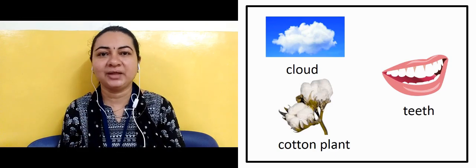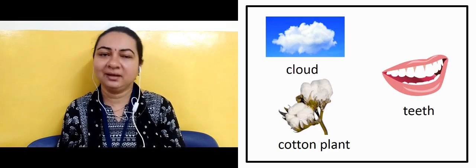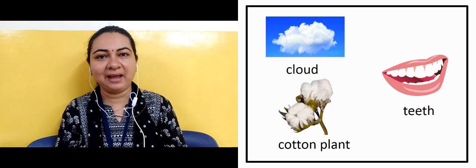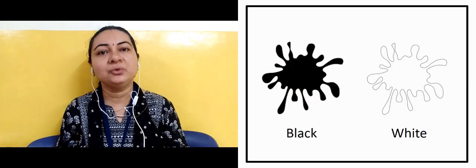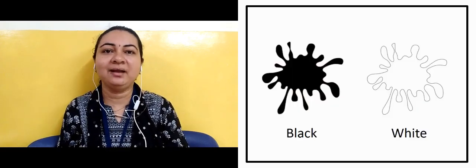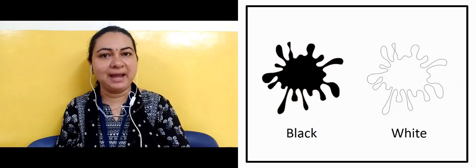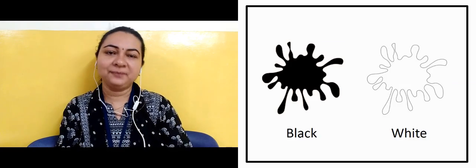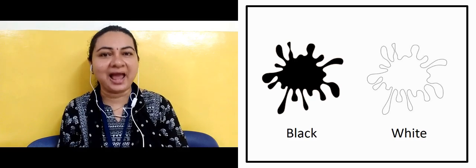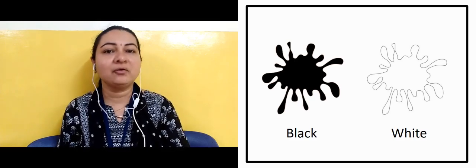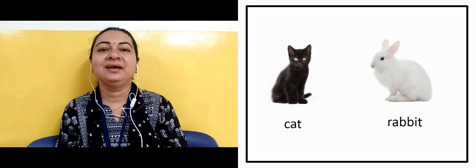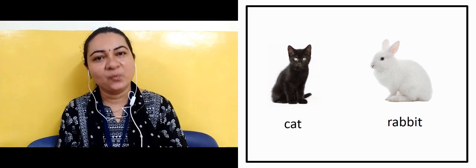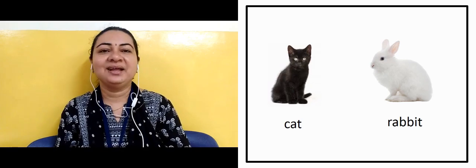The next slide shows us a comparison between black color and white color. You need to identify what is black color — first one is black, another it is white. The next slide shows us a cat and a rabbit. What is the color of cat here? It is black in color. Yes, it is black in color. And the color of the rabbit is white in color.